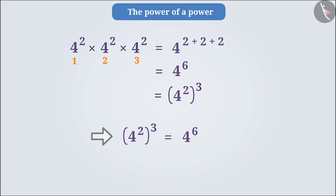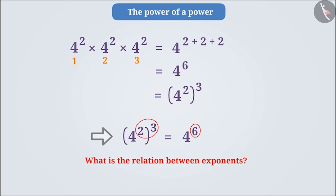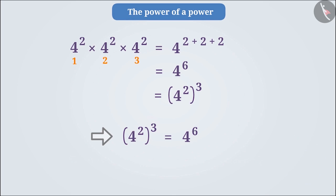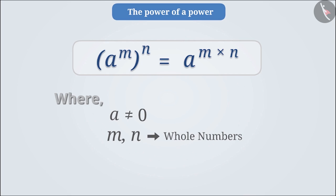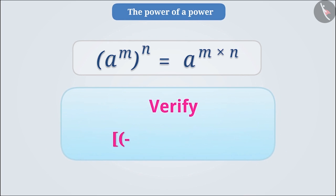Now the base is the same — can you determine the relation between the exponents? Here, it will be 2 into 3 equals 6. Therefore, broadly, for a non-zero integer a and whole numbers m and n, a to the power of m to the power of n is equal to a to the power of mn. When the power of a power is given, we multiply all the powers and express the result as the exponent of the base. Verify: minus 5 to the power of 3 to the power of 4 is equal to minus 5 to the power of 12.